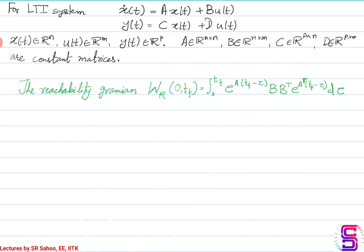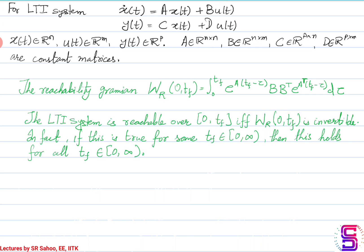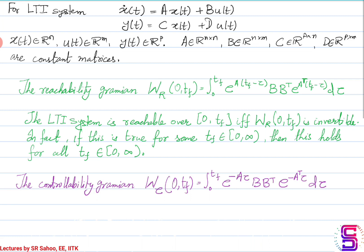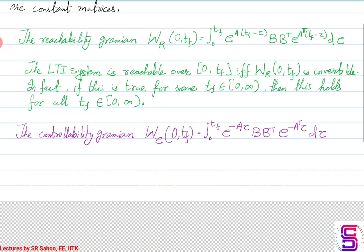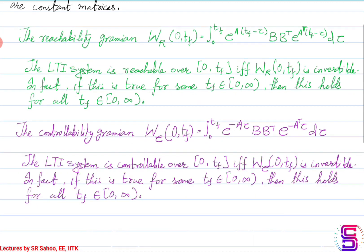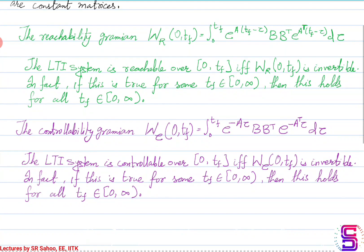Recall the definition of the reachability Grammian for the LTI system, which is defined over the interval 0 to tf. This reachability Grammian is invertible for a specific value of final time tf, then it would be invertible for any finite value of tf. Similarly, for the controllability Grammian, if it is invertible for a given specific tf, then it would be invertible for any finite value of tf.